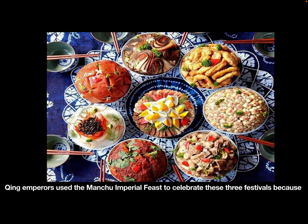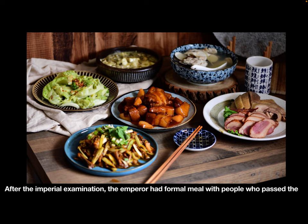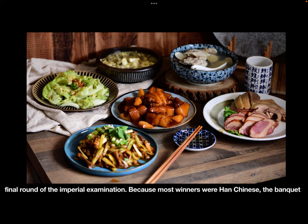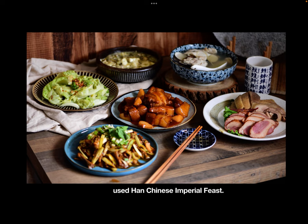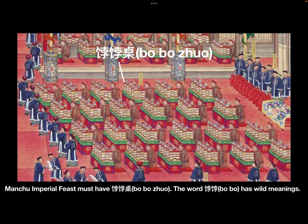The Qing emperors used the Manchu Imperial Feast to celebrate those three festivals, because most attendants were royal clan members, Manchurian nobles, and Manchurian government officers. After the imperial examination, the emperor had formal meals with people who passed the final round, and because most of the winners were Han Chinese, the banquet used the Han Chinese imperial feast.